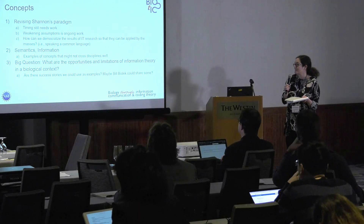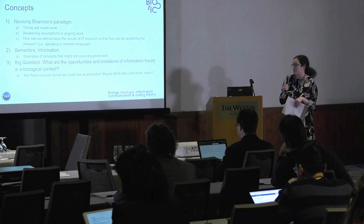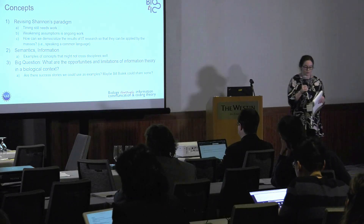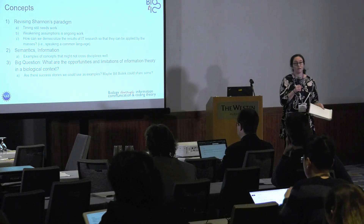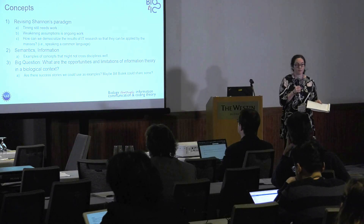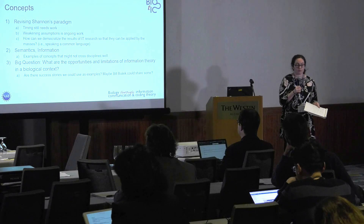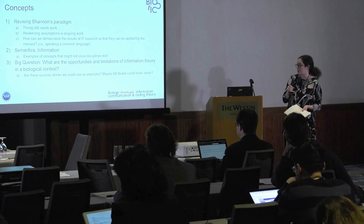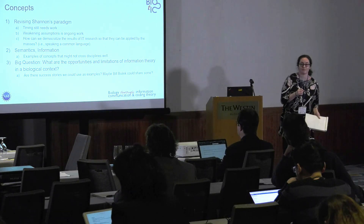The big question we'll leave on is: what are the opportunities and limitations of information theory in a biological context? Somebody pointed out that if we really think information theory is a universal framework we can apply across organisms and across scales, we should have a series of success stories — showing that information theory made a prediction or was used to elucidate what the system was actually doing. There's certainly work by Bill Bialik that points to this, and there's more work in this space.